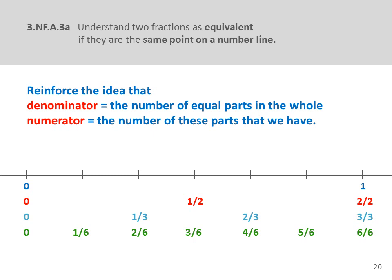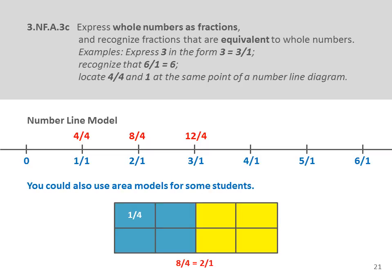I would also have a large number line across the front of the room and individual number lines on desks or tables, and begin to repeat the names we use for the parts of a fraction — the denominator and the numerator. The third section, 3NFA3C, asks us to express whole numbers as fractions and recognize fractions equivalent to whole numbers. Examples given in the standards are: express 3 as 3/1, recognize that 6/1 equals 6, and locate 4 fourths and 1 at the same point on a number line diagram.